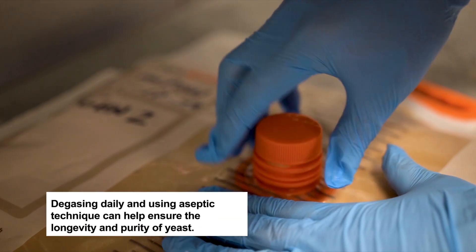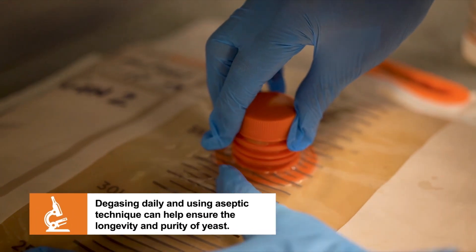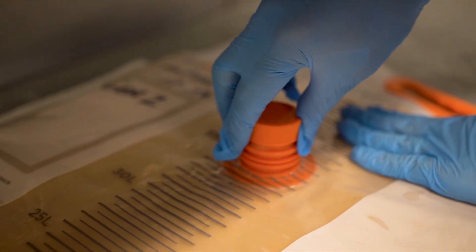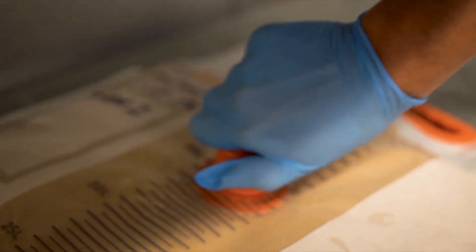Vent the Flexbrink daily via one of the ports. Sanitize the cap and slowly unscrew until the venting CO2 can be heard. Allow the pressure to release and reseal the cap.